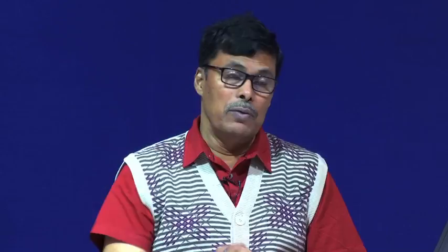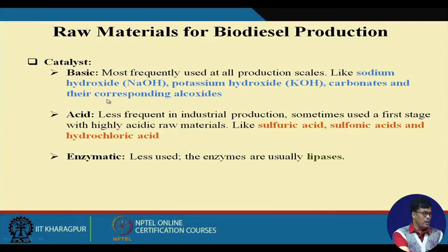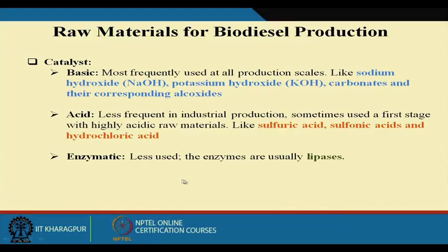The catalyst used is of two types: basic and acidic. Basic catalysts are most frequently used at all production scales, such as sodium hydroxide, potassium hydroxide, carbonate, and their corresponding alkoxides. Acidic catalysts are used less frequently — sulfuric acid and hydrochloric acid. Enzymes like lipase are also used to some extent.